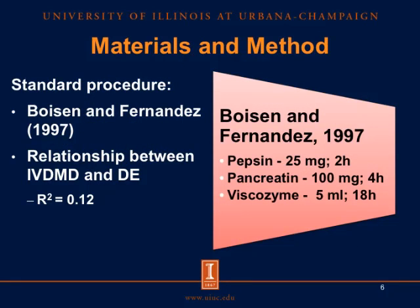For this experiment, we considered the Boyset and Fernandes procedure as the standard procedure, published in 1997. The Boyset and Fernandes procedure is a three-step in vitro procedure that simulates the digestion processes in vivo. Step one made use of pepsin to simulate gastric digestion, added at 25 milligrams per mil, with samples incubated for two hours. Step two made use of pancreatine to simulate small intestinal digestion, added at 100 milligrams, with samples incubated for four hours. For step three, viscozyme was added at five mil to simulate hindgut fermentation, with samples incubated for 18 hours. So in total, the incubation period consisted of 24 hours.